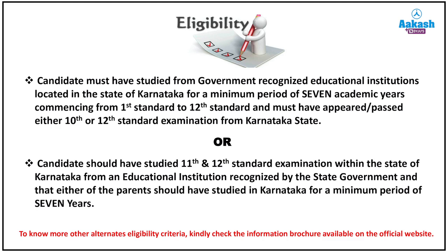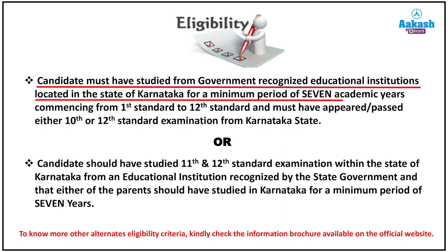I'll be talking about various segments one by one, but first it is important to understand the eligibility criteria. Among the many eligibility criteria, here are the most important: a candidate must have studied from a government recognized educational institution located in the state of Karnataka for a minimum period of seven academic years, commencing from 1st standard to 12th standard, and must have appeared or passed either 10th or 12th standard examination from Karnataka state.